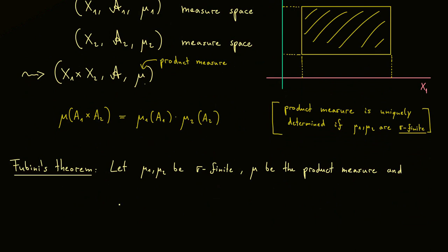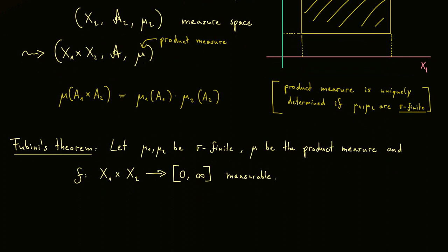And now we also consider a function f that lives on this Cartesian product. As always, we start by considering non-negative functions where we also allow the symbol infinity. Naturally, this map should be measurable with respect to this sigma algebra here and the Borel sigma algebra here on the right.